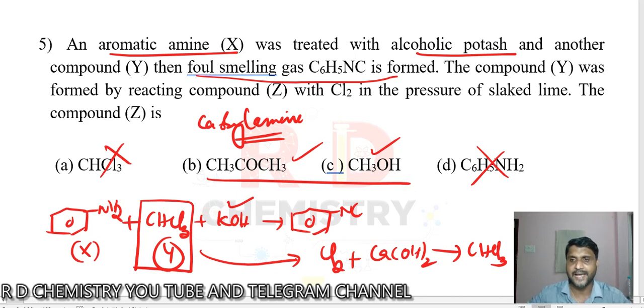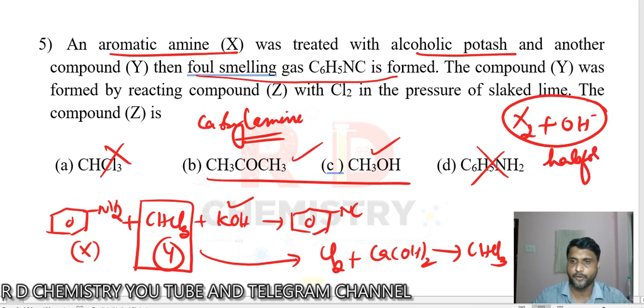This is generally for the haloform reaction we make. That produces the haloform like chloroform, iodoform, and bromoform. To answer haloform reaction, the compound must contain CH3CO group. Therefore, answer is B option.